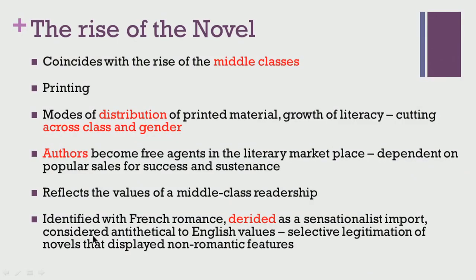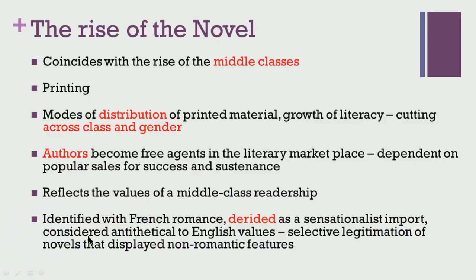During this time, we also find the emergence of the author as a more independent figure, no longer dependent on the state or on particular individuals. It is not to say that the novel form was completely free from criticism. There were objections against the rise of this new form. It was identified with the French romance, felt to corrupt the morals of the youth in England, and considered antithetical to English values. Because of this, at least in the earlier time, there existed a certain selective legitimation of novels that displayed non-romantic features.